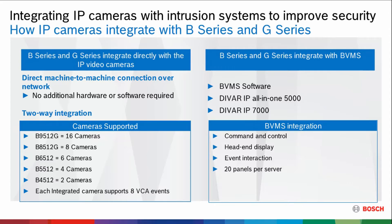Bosch makes a long line of IP cameras, from very small simple cameras all the way up to our MIC cameras used for oil rigs. All those IP cameras can be integrated with Bosch intrusion panels. The neat thing here is that it's a direct machine-to-machine connection over the network. There's no additional hardware or software required. It's a two-way integration, meaning that not only can the camera talk to the panel, but the panel can talk to the camera, and we get some unique benefits from that.